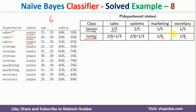For marketing: there are 2 marketing examples. Probability of marketing given senior — there is only one senior example when department is marketing, so we get 1/5. The other marketing example is junior, so probability of marketing given junior is 1/6.